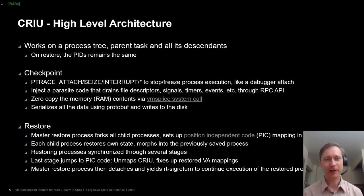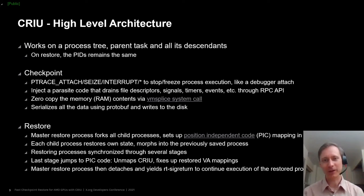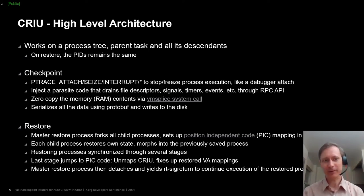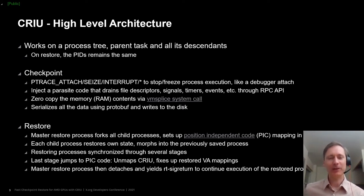So with that let's take a look at the high-level architecture of CRIU. CRIU saves a hierarchy of processes — a tree of processes — starting with a parent task and then including all its child processes and their child processes and so on. On restore, the same tree of processes gets restored using the same PIDs, the same permissions, the same open files, memory contents and so on. So when CRIU creates the checkpoint it uses ptrace to attach to the running processes.